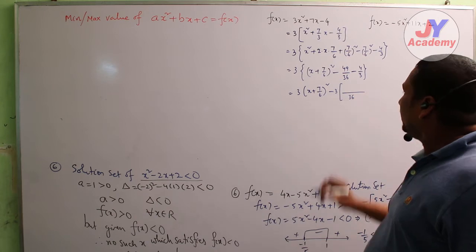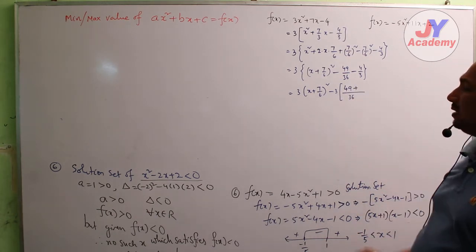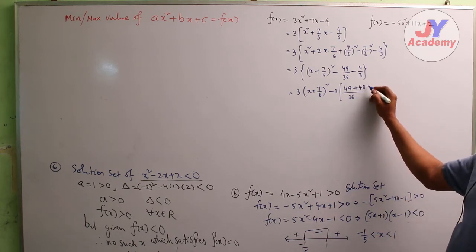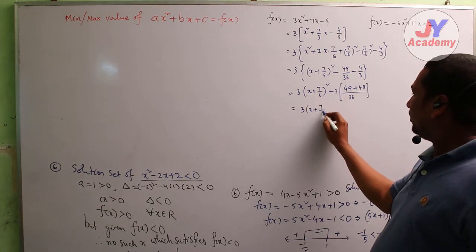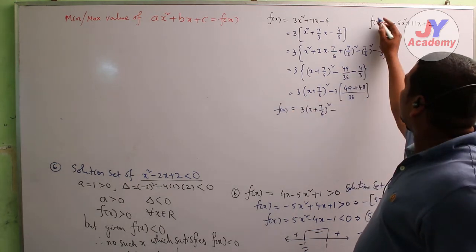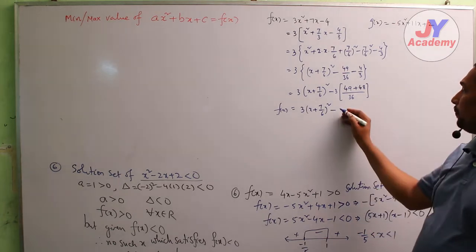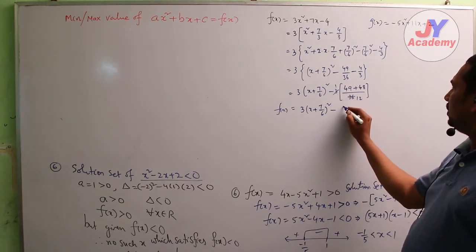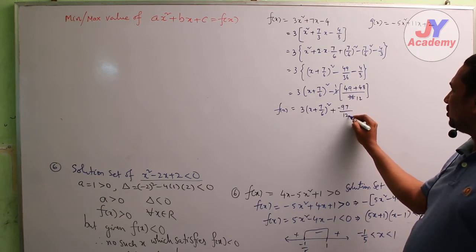So 49 plus 48 — here 4/3 gives 48 over 36 — gives 97. So f(x) equals 3 into [x + 7/6]² minus 97/12. Let this be f(x).